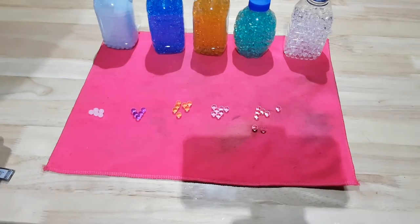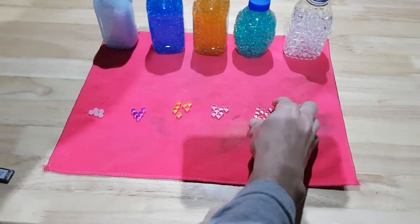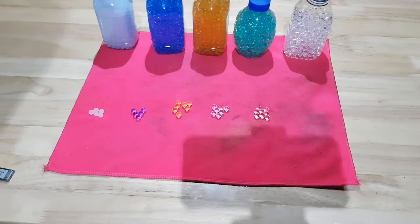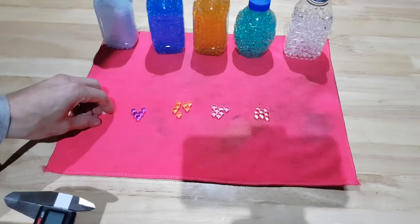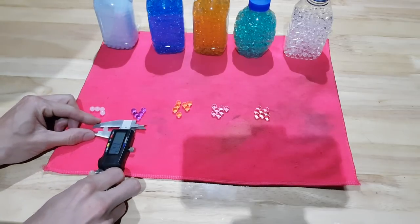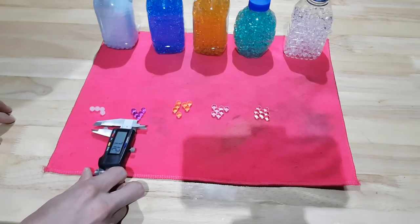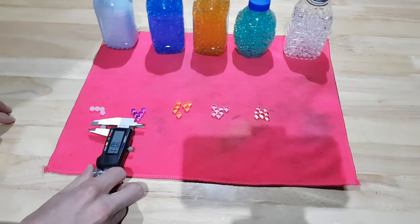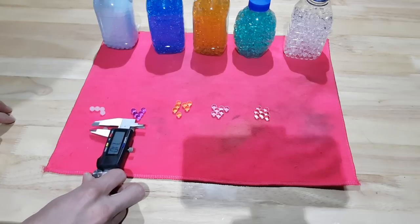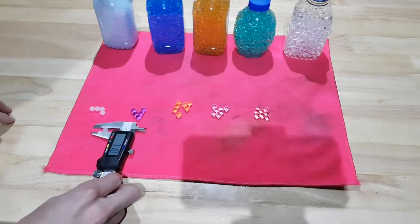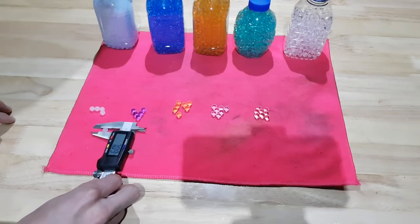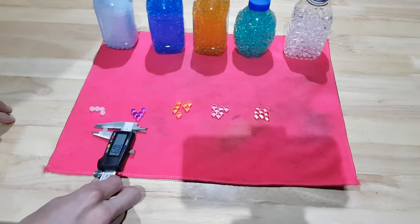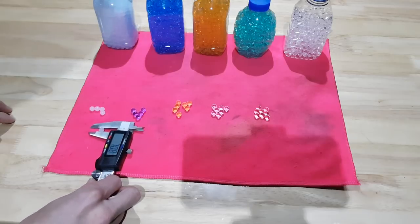And the turquoise, about a 7.5 to 7.6. So interesting, they're all very close but slightly different sizes. Probably the big difference is in the milkies. The milkies are definitely smaller than all of the others. There we go, I can pick it up at 7.08.